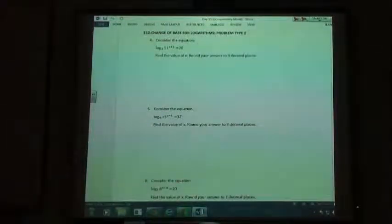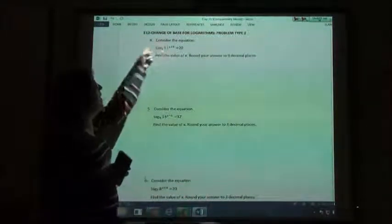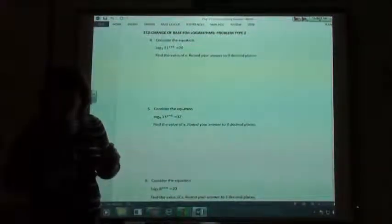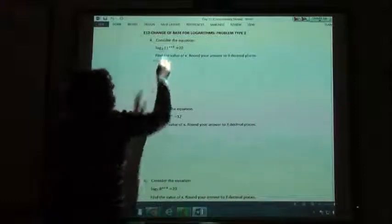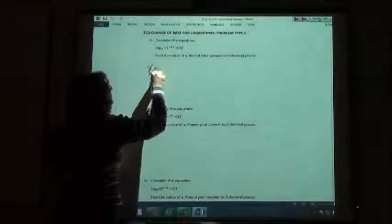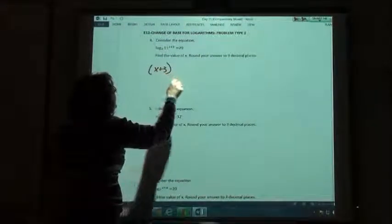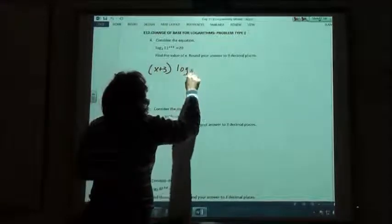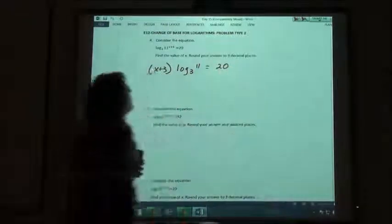Any time we have a logarithmic expression, or a natural log for that matter, if there is a variable in the exponent, we had that rule that said we could take the exponent and move it out in front. So what we're going to do is we're going to rewrite this as (x+3) times the log base 3 of 11 equals 20.